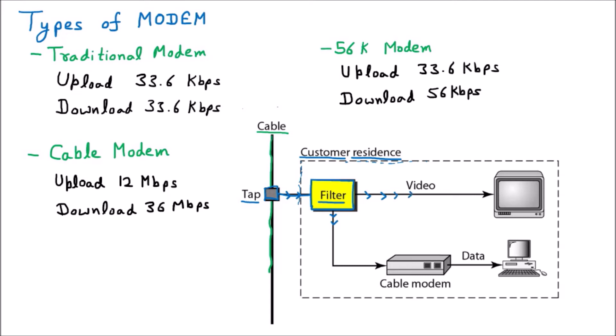One line goes to the TV — not directly, but through a device that converts it to cable TV, so you can watch channels like ZTV, Cartoon Network, MTV, or National Geographic. All those cable TV channels come to your TV, and you can watch them, which is made possible through the internet. That's why this cable TV modem is very popular. The other line goes to the cable modem.